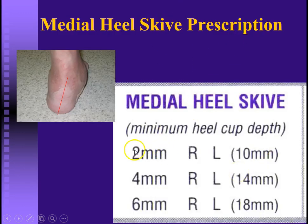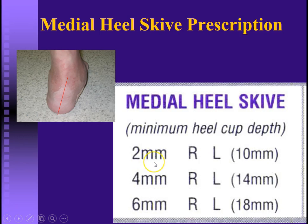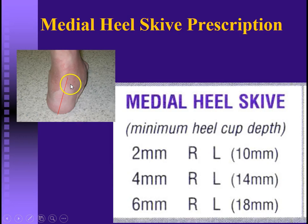When deciding how much skive to use, that's usually based on the resting calcaneal stance position. If you have a very mildly everted heel — maybe one to four degrees — use a two-millimeter skive with at least a 10-millimeter heel cup. For a moderately everted heel of five to eight degrees, use a four-millimeter skive, and above that a six-millimeter skive. The greater the amount of skive, the greater the heel cup depth must be. These are minimum heel cup depths — I'd usually go even a little deeper than that.